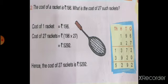Cost of 1 racket is equal to Rs. 196. So the cost of 27 rackets is equal to Rs. 196 into 27. Because we have value of 1 racket given and we have to find out the value of more rackets. When we multiply 196 into 27, answer will be 5292.